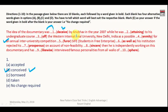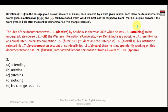The sentence wants to say that while he was doing something, the idea was conceived. He was doing his undergraduate course, so we want to say he was attending to his undergraduate course. You always 'attend to' your undergraduate course, so the answer here is 'attending'.